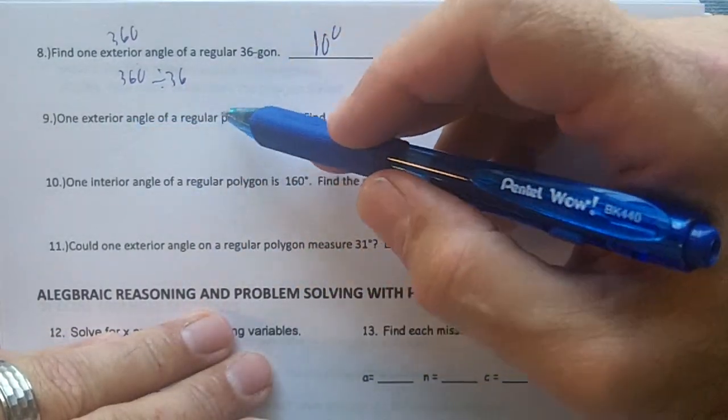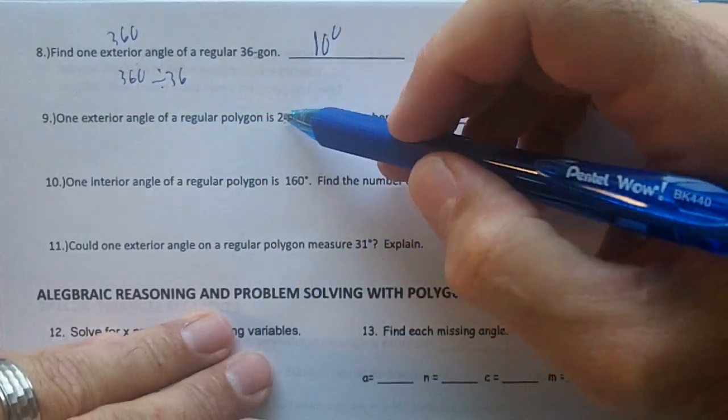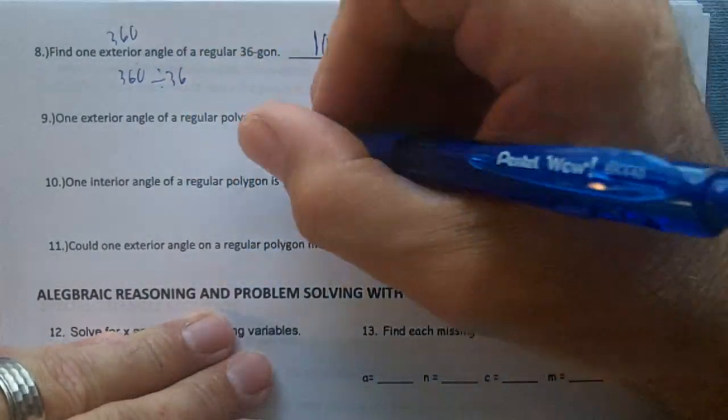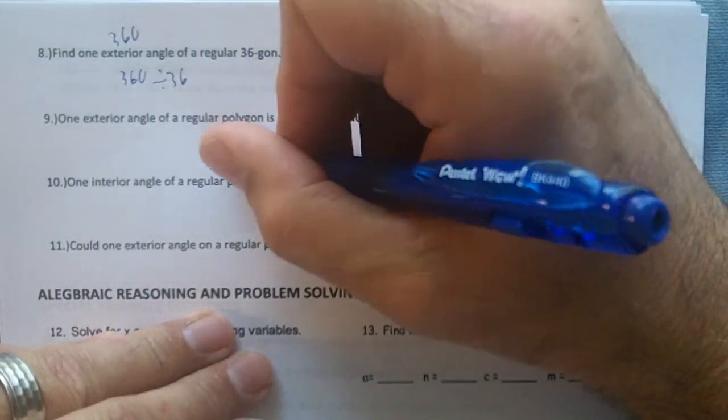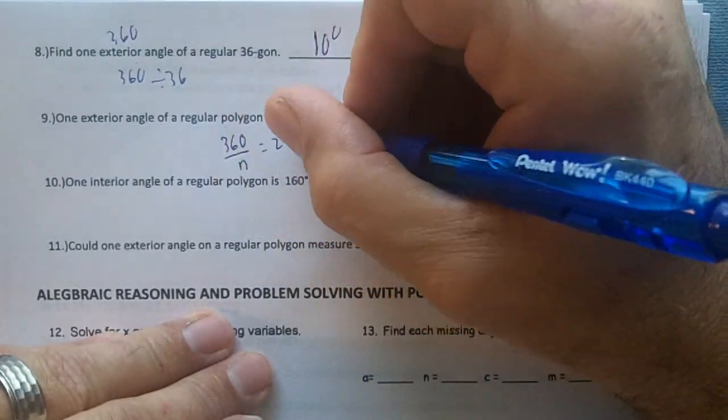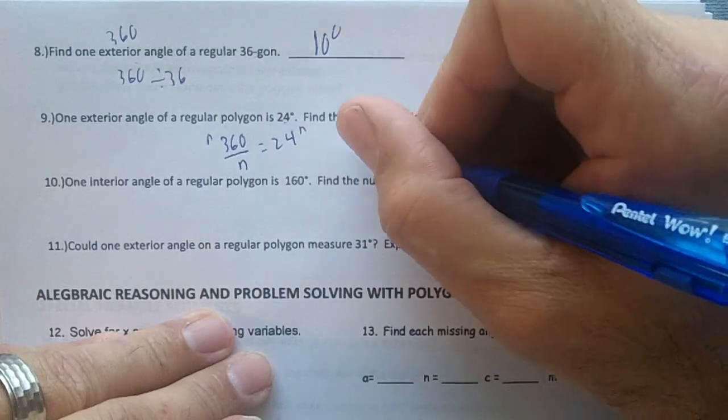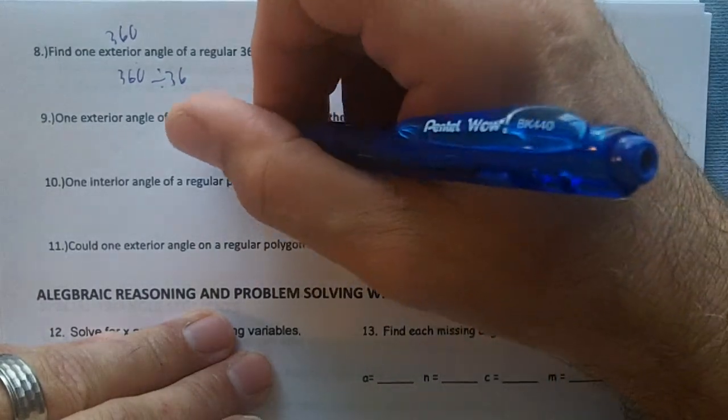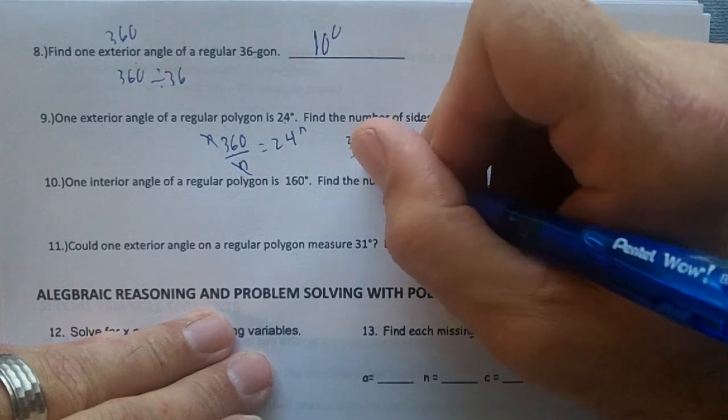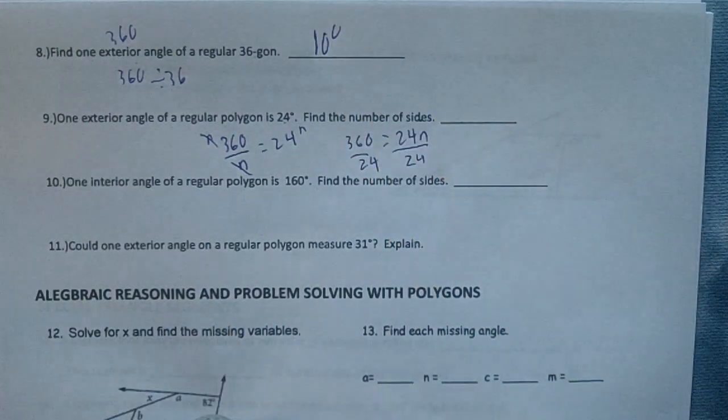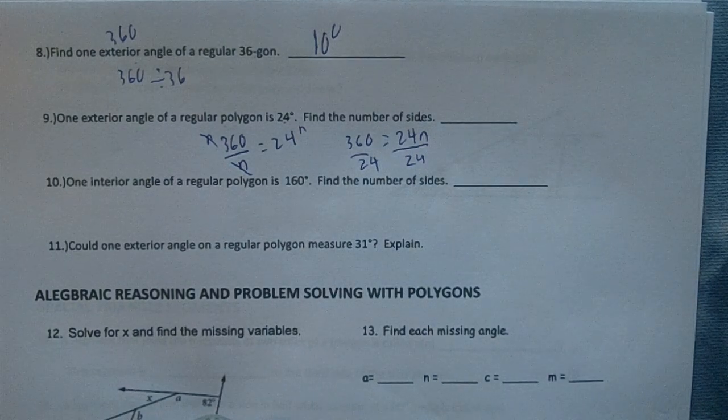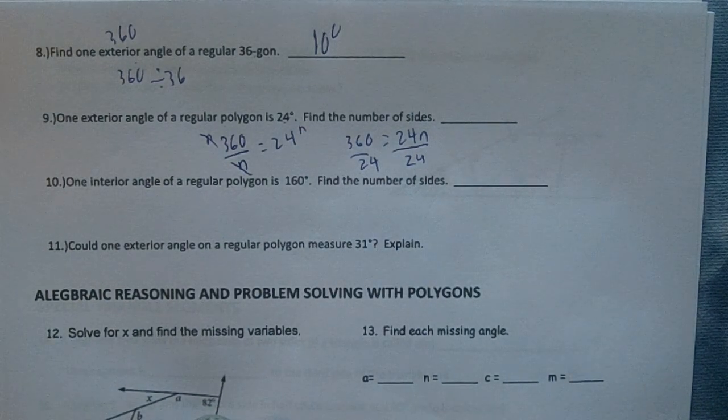One exterior angle of a regular polygon is 24 degrees. Find the number of sides. So let's do the opposite of this. 360 divided by n equals 24. I'm going to multiply both sides by n, so I'll get 360 equals 24n. Then you divide by 24. 360 divided by 24 is 15.